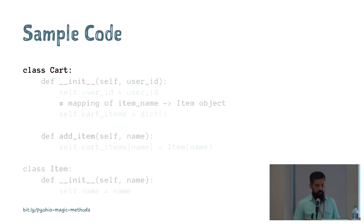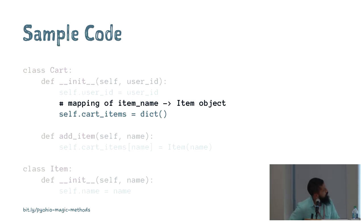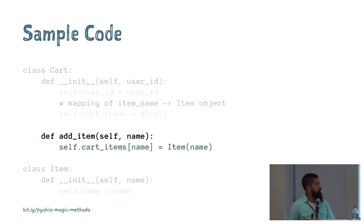Here's a look at some sample code. While enumerating over our magic methods, we will be using this to iteratively add magic methods into. There's a class Cart and a class Item. The Cart class has a dictionary called cart_items — a mapping between an item name and an item object. There's a simple add_item function that takes in a name and adds it into the cart_items dictionary.